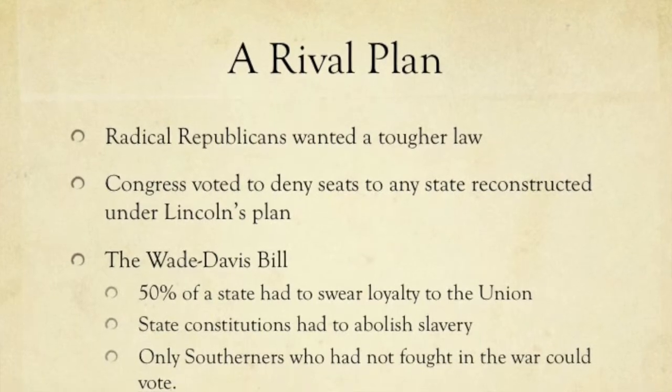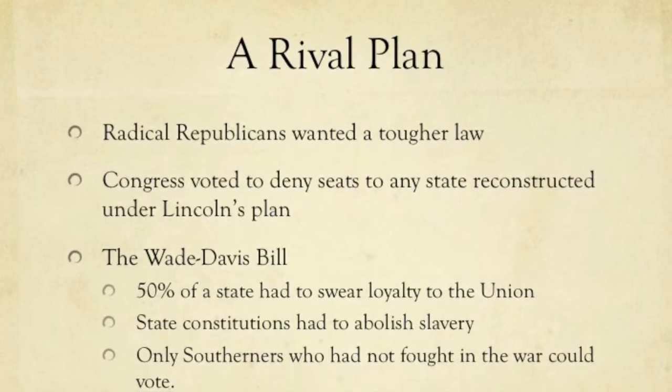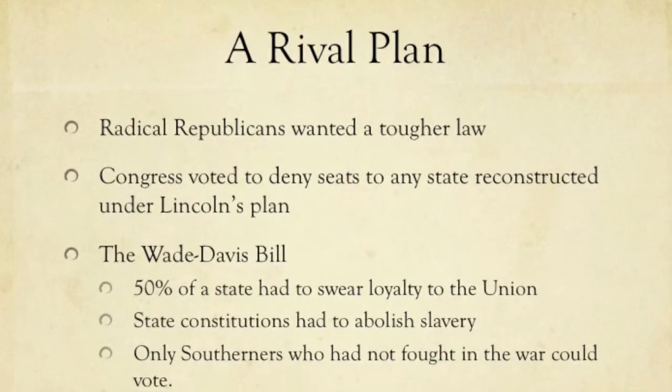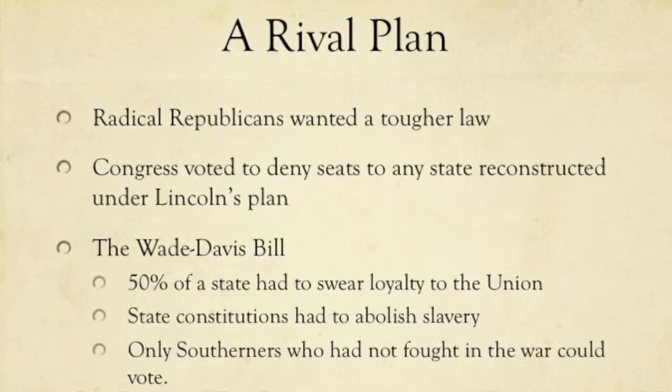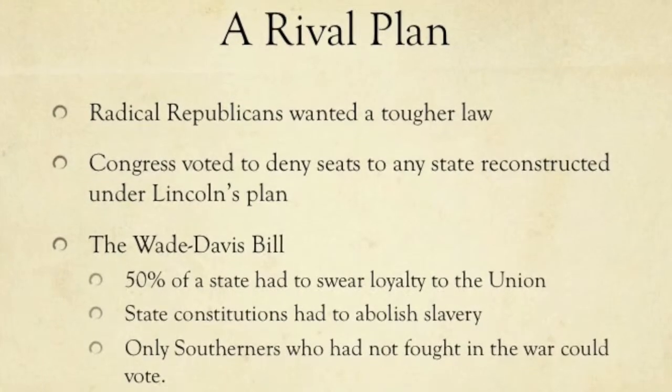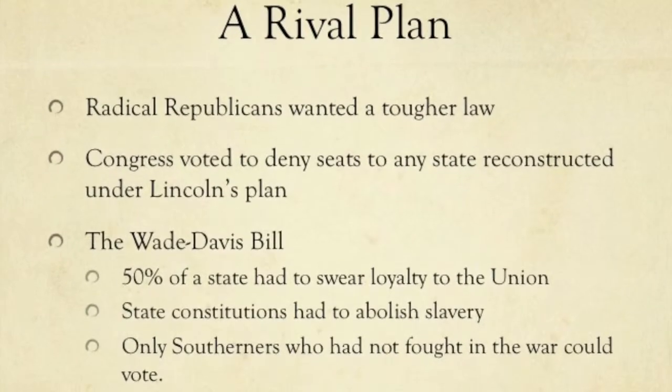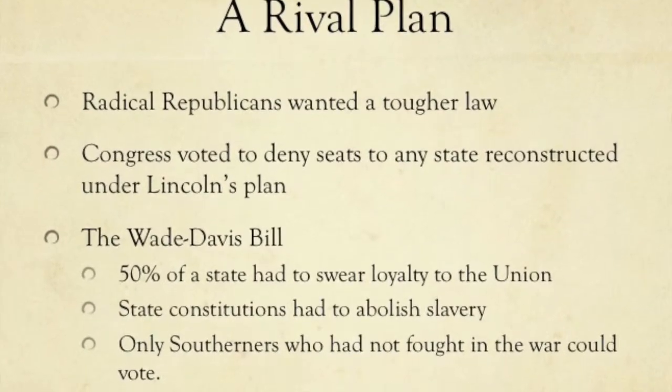The Radical Republicans wanted a much tougher law. They wanted to punish the South for its actions, and so they voted to deny seats to any state reconstructed under Lincoln's plan.